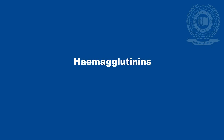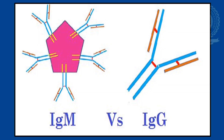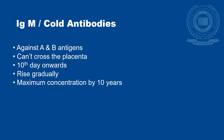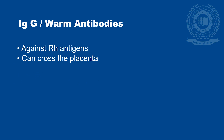Hemagglutinins are mainly of two types: IgM and IgG. Structurally, IgM is a pentamer and IgG is a monomer. IgM reacts best at cold temperature, while IgG reacts at body temperature. IgM both coats and lyses the RBCs, whereas IgG coats the RBCs only but does not lyse them. IgM cannot be induced by mismatched blood transfusion, while IgG can be. IgM, being a macromolecule, cannot cross the placenta, while IgG can. In summary, IgM or cold antibodies are active against A and B antigens and cannot cross the placenta, with formation starting from the 10th day onwards, reaching maximum concentration by age 10. IgG or warm antibodies are active against Rh antigens and can cross the placenta.